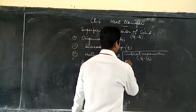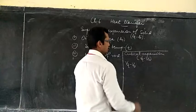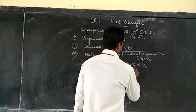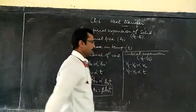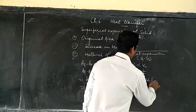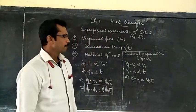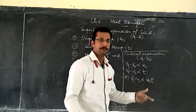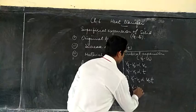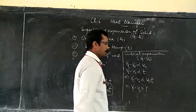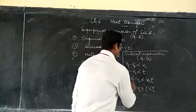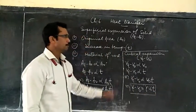Increase in Volume is directly proportional to the Original Volume, and also directly proportional to the Increase in Temperature. Combining these two, we can write Original Volume into Temperature. This proportionality sign is removed by introducing another constant Gamma, giving us: Increase in Volume = Gamma × Original Volume × Temperature. This is the expression for Cubical Expansion.